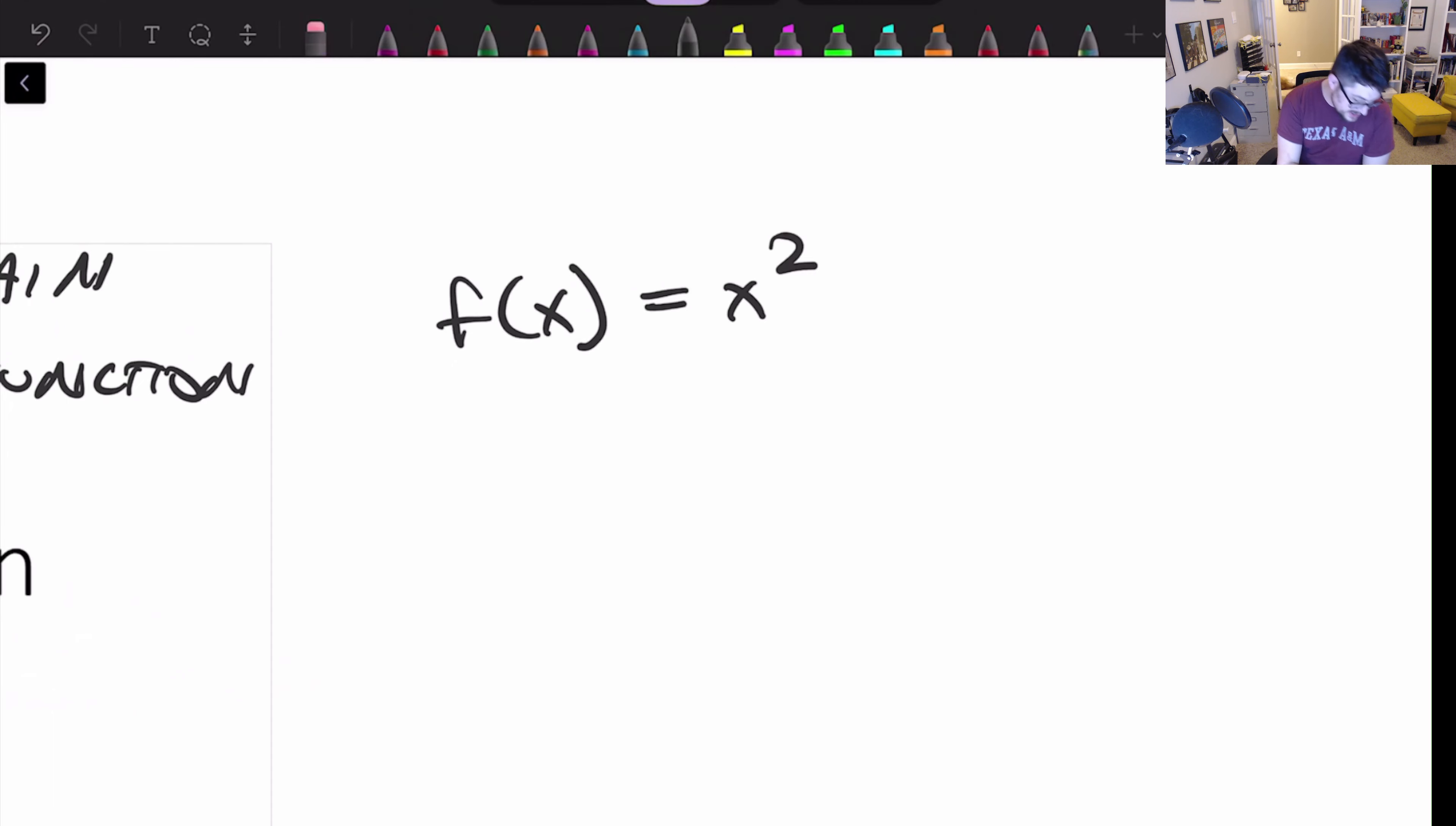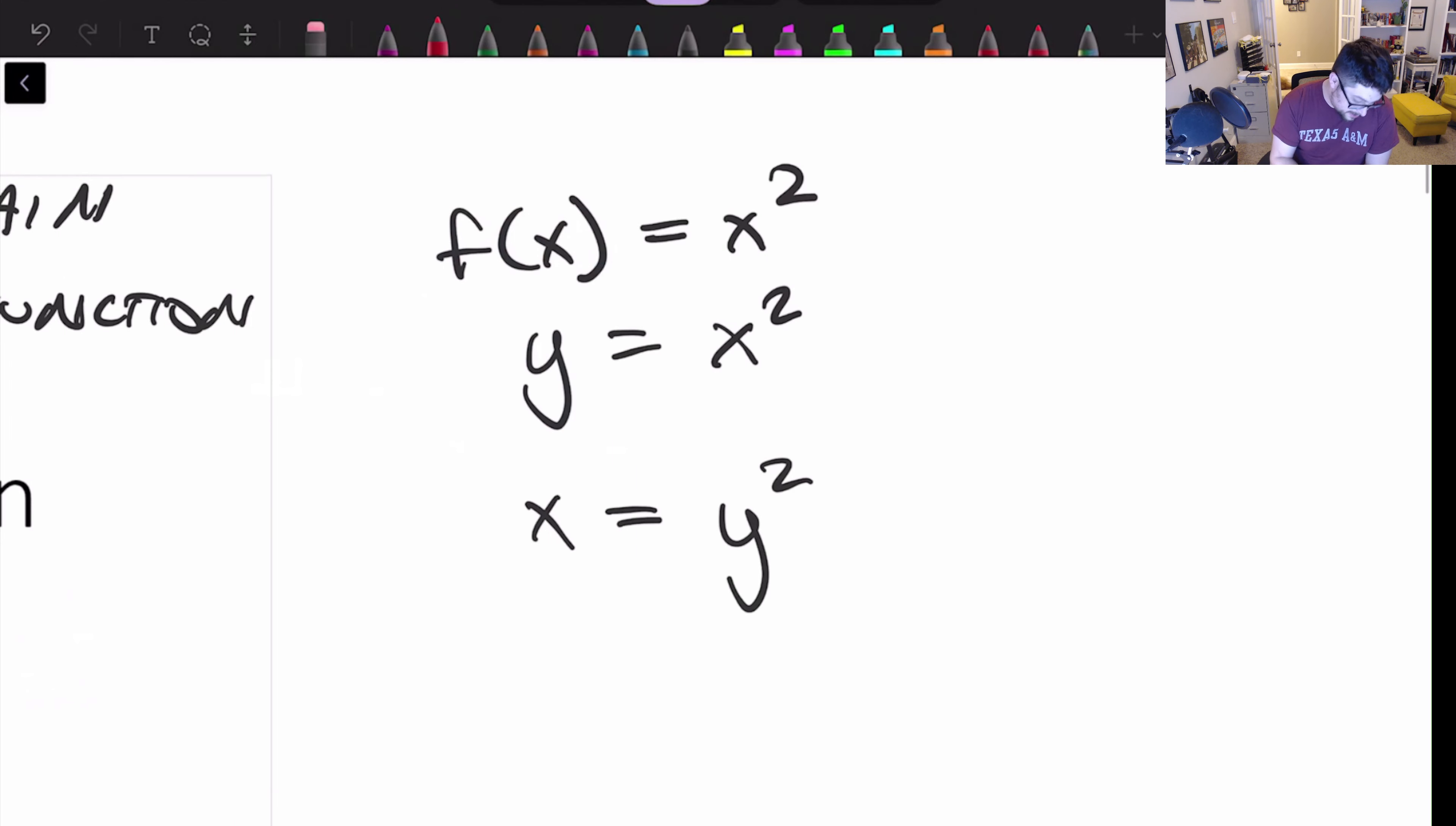Now if we wanted to inverse that, the very first thing that we would do is rewrite this thing. We'd rewrite it as y equals x squared. And then we'd switch the x and the y. So now we have x equals y squared. And so to get the y by itself now, we would take a square root of both sides. And we would be left with square root of x equals y.